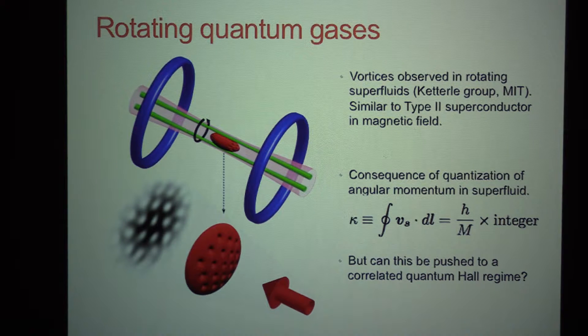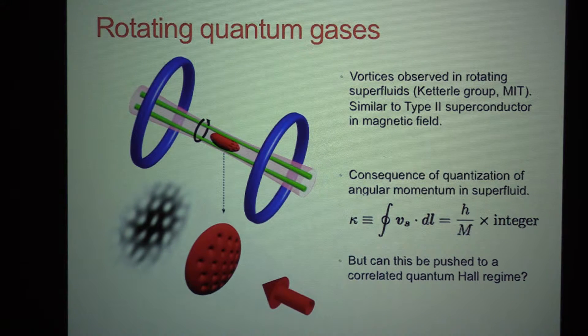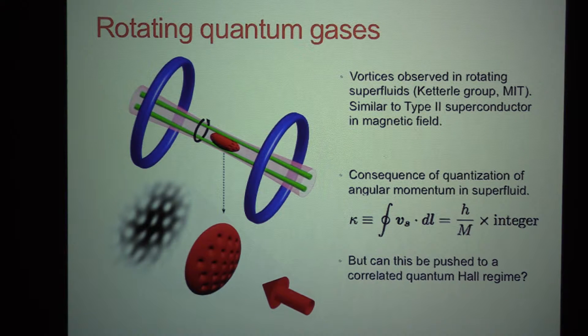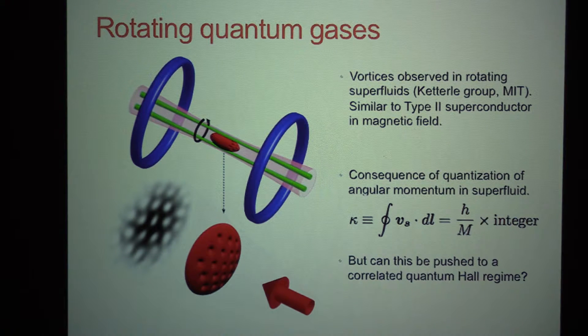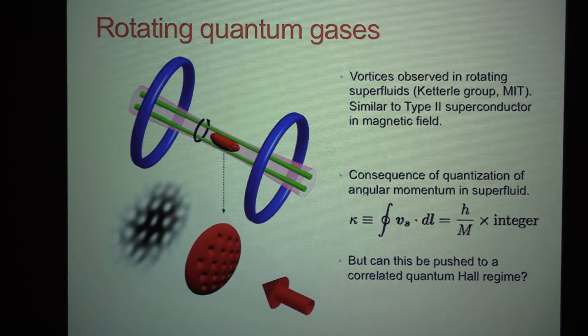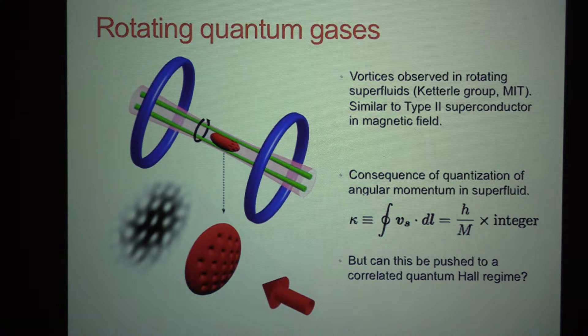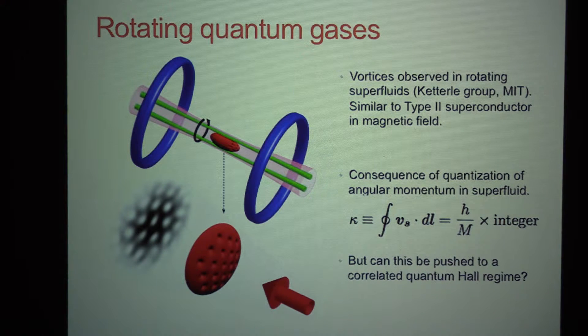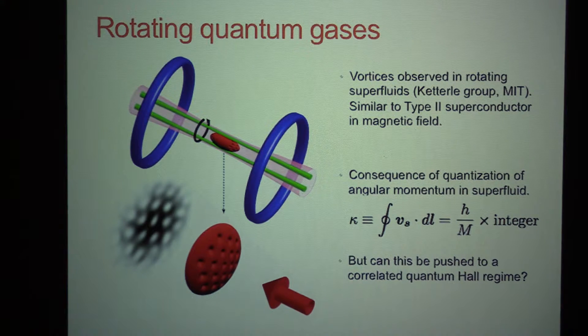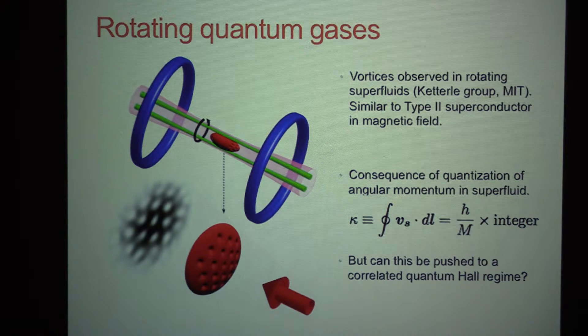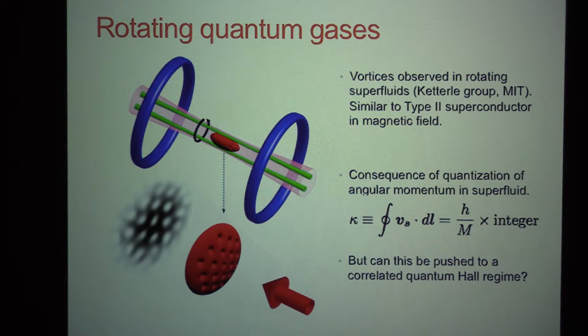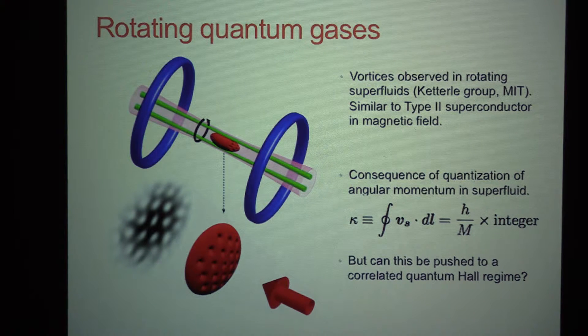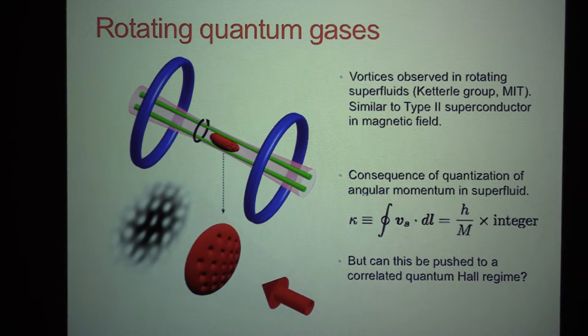This is what you expect because in a superfluid, you can only add the angular momentum in a quantized manner. But you can also think of it in a different way. If you have a type 2 superconductor, you add a magnetic field to it, you also get vortices. So here you're seeing the analogy that a rotating neutral gas looks like a charged gas that is in a magnetic field. The faster you rotate, the more vortices. It's like a larger magnetic field. So now the question is, can this be pushed towards a strongly correlated quantum Hall regime? Can you get to interesting phases with this approach?